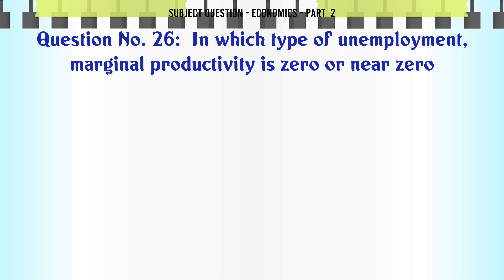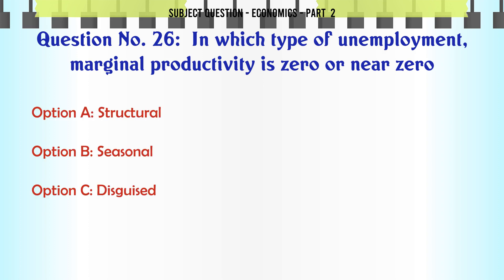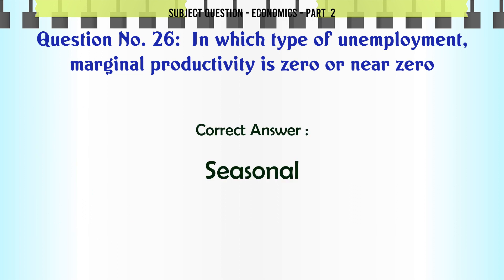In which type of unemployment is marginal productivity zero or near zero? A. Structural. B. Seasonal. C. Disguised. D. Frictional. The correct answer is: Seasonal.